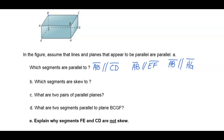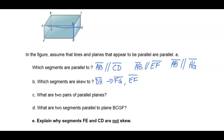Which lines are skew to DH? We could say FG is skew — it's in the back and not on the same plane. We could also say EF. And segment AB is skew to DH. We could also say BC across the back. So DH is skew to AB, FG, EF, and BC.